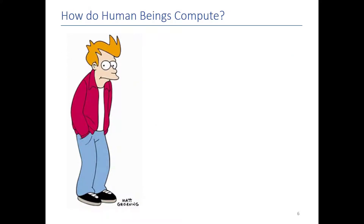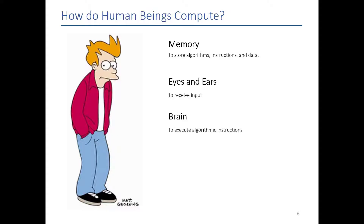Human beings can be thought of as computers. This is Fry from Futurama. If you think about how Fry computes: he has memory to some extent, he has eyes and ears to receive input, he has a brain to process that information, and he has hands and a mouth to take actions and output that information to the world.